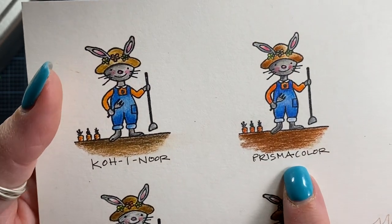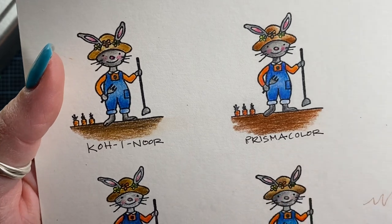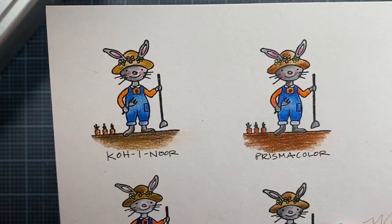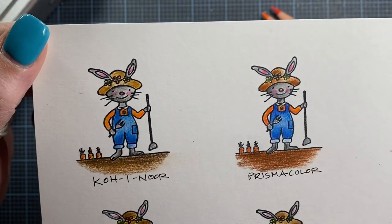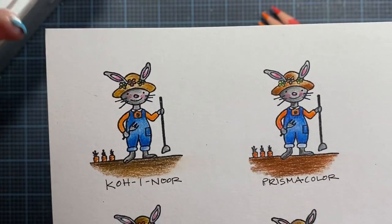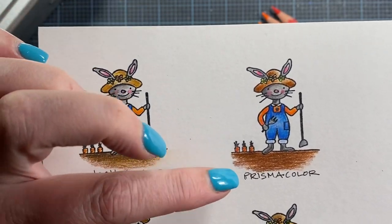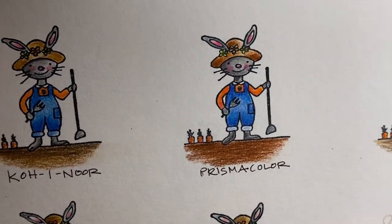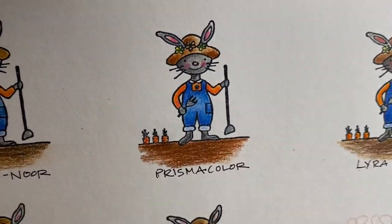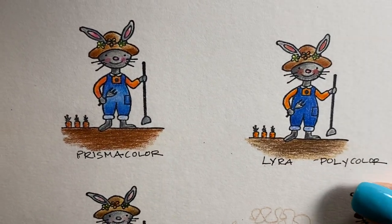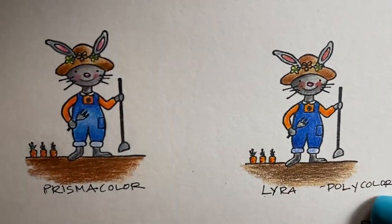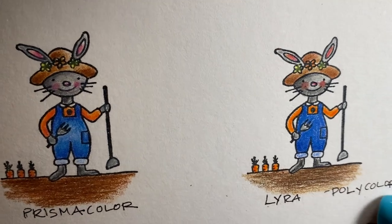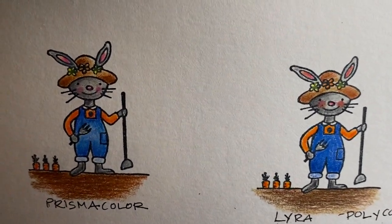Then I also colored it in my old Prismacolors. The Prismacolors I have are probably, I don't know, over 15 years old, probably not quite 20 years old. But they've been around a day or two. And so that little bunny turned out really cute as well. And then I colored the next one with the Lyra Polycolors. And that little bunny turned out really cute. I think they all turned out really cute, actually. But you can see, hopefully, some differences in the coloring.